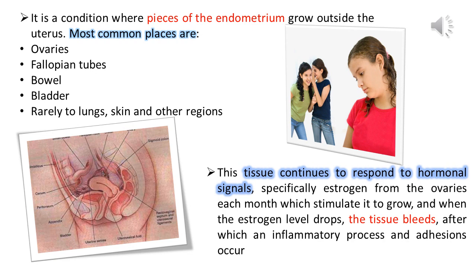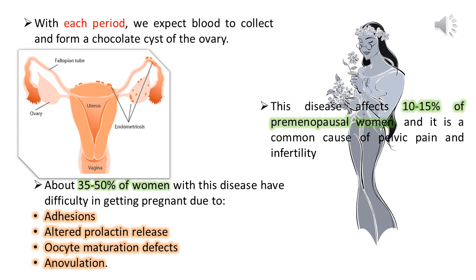This tissue continues to respond to hormonal signals, specifically estrogen from the ovaries each month, which stimulates it to grow. And when the estrogen level drops, the tissue bleeds, after which an inflammatory process and adhesions occur. With each period, we expect blood to collect and form a chocolate cyst of the ovary.